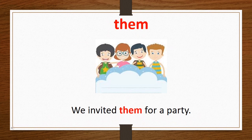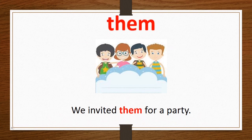The last word from list one is 'them.' Them is used when there are more than one person, animal, or object. Now let's read the sentence: We invited them for a party.